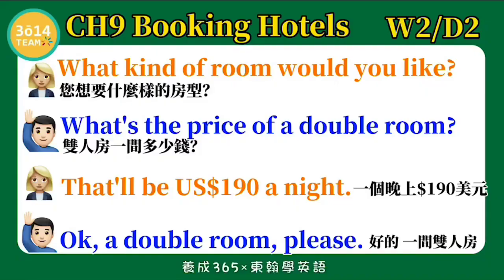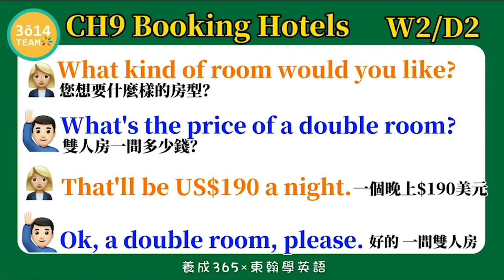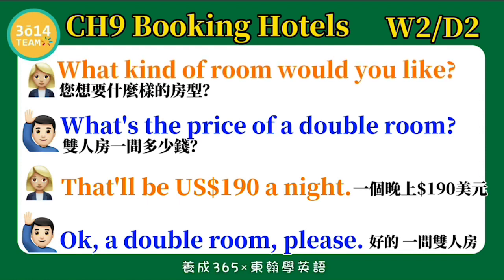What kind of room would you like? 你想要什么样的房型呢? What's the price of a double room? 双人房一间多少钱? That will be one hundred ninety US dollars a night. 一个晚上一百九十美元。OK, a double room, please. 好的一间双人房。跟着我念一次。 What kind of room would you like?